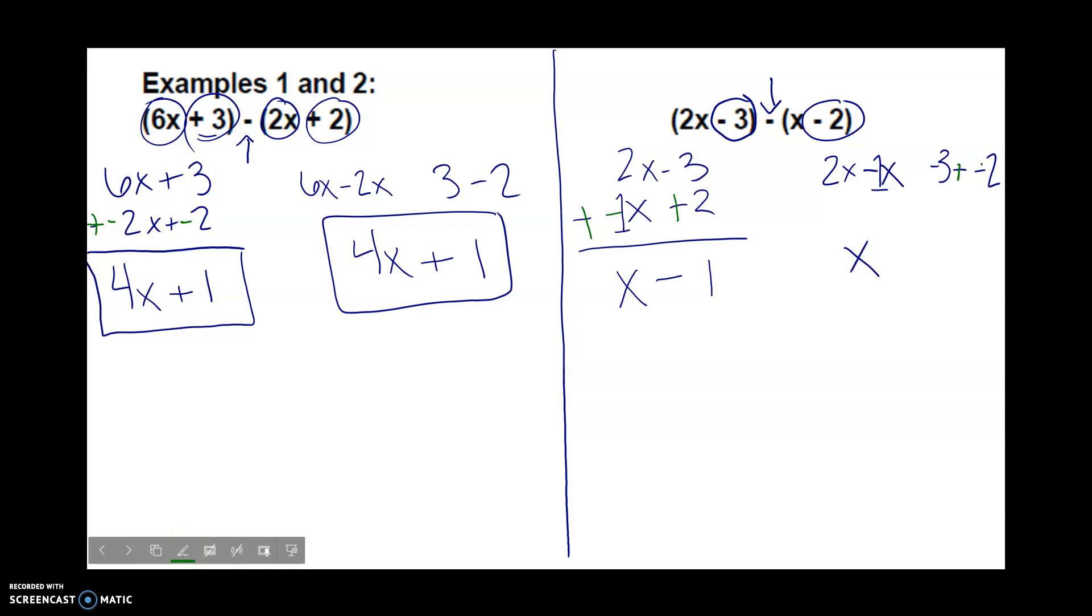Make it plus a positive. Negative 3 plus 2, different signs subtract. The negative team wins, 3 is larger, and it wins by 1. So I got x minus 1. Because it was a negative 1, that's where I got the subtraction sign from. At any point, pause and rewind if you have questions.